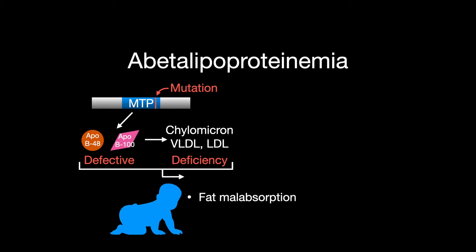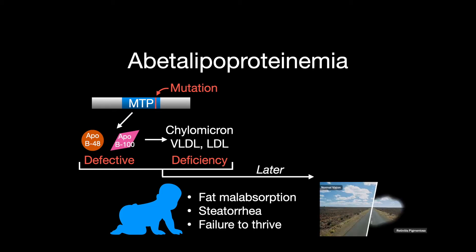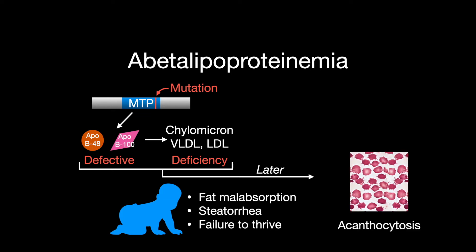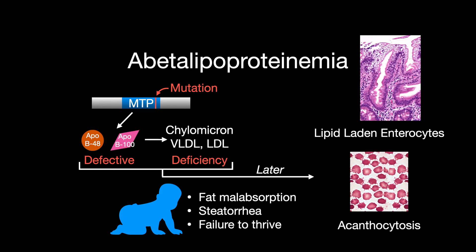In infants, this causes fat malabsorption, steatorrhea (lipids in the stool), and failure to thrive. Later in life, this disease presents with retinitis pigmentosa, vitamin E deficiency causing spinocerebellar degeneration, further resulting in progressive ataxia and acanthocytosis. Inspection of the intestines will show lipid-laden enterocytes.